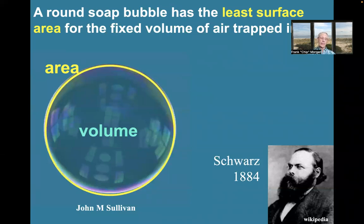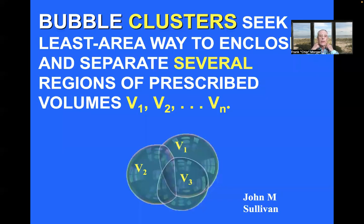The story starts with a single bubble, which is round. That's the least area way to enclose the given volume of air, as was proved mathematically by Schwartz back in 1884. But similarly, clusters of bubbles look for the least area way to enclose and separate several regions of prescribed volume. So here's a question for you.